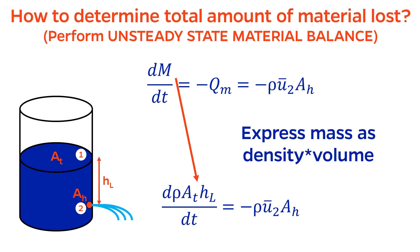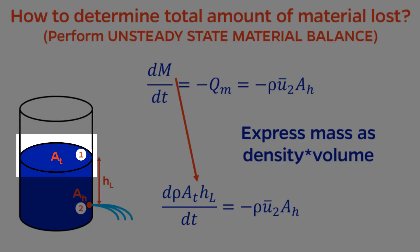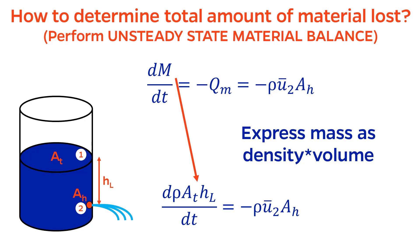So that we can separate variables more effectively, let's also express mass as density times the volume. Except here, volume is the cross-sectional area of the tank times HL. Since we are now tracking two areas, pay careful attention to the subscripts here. AT is the area of the tank, and AH is the area of the hole.